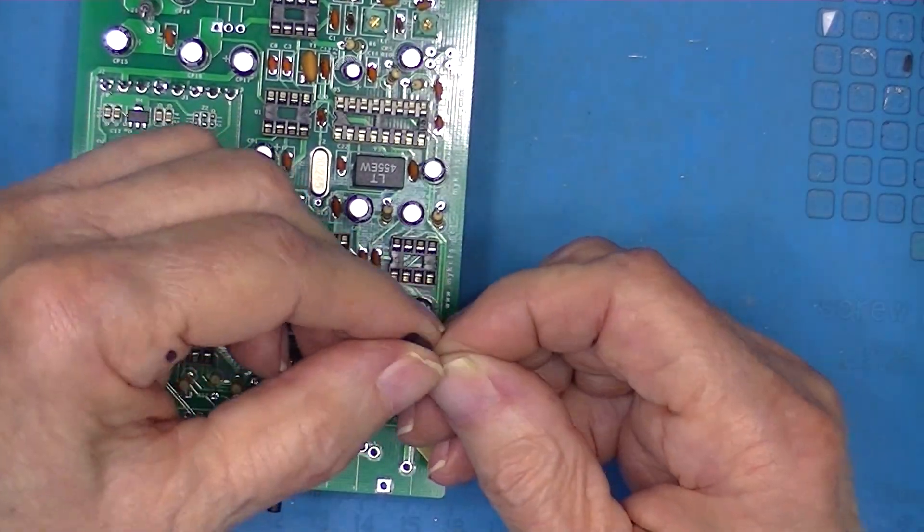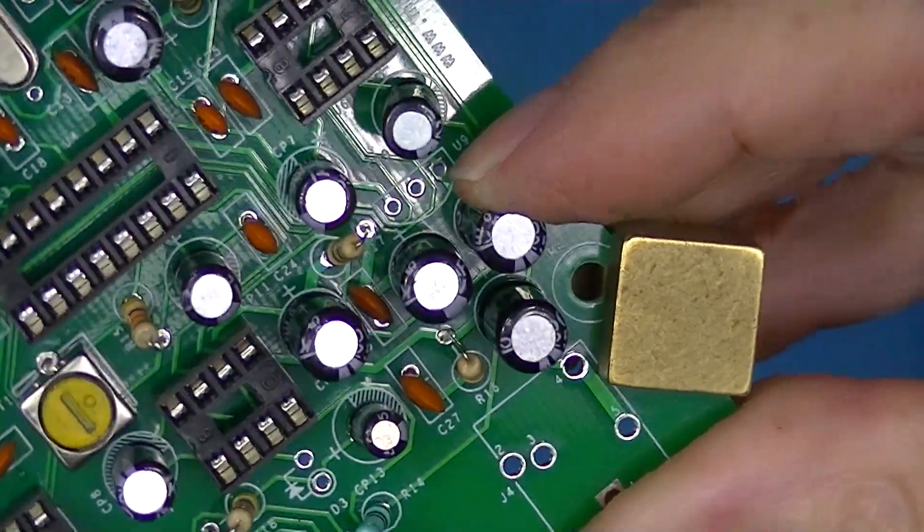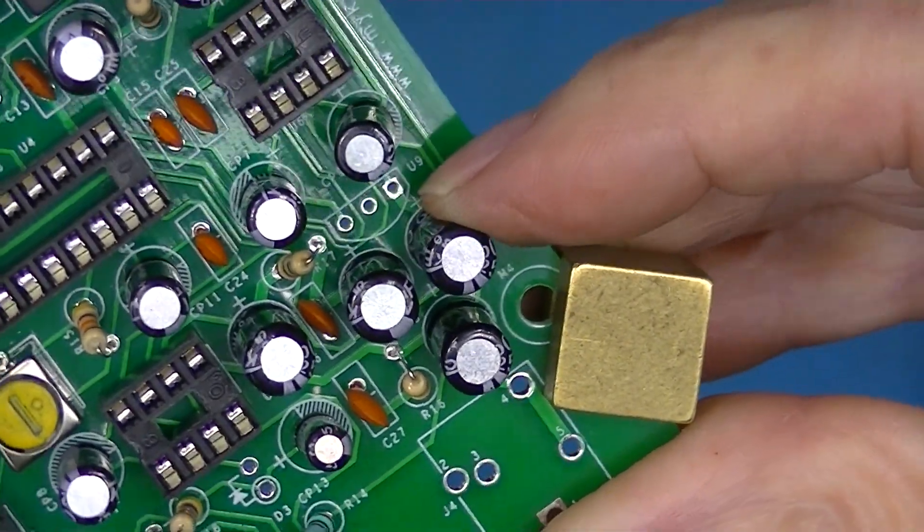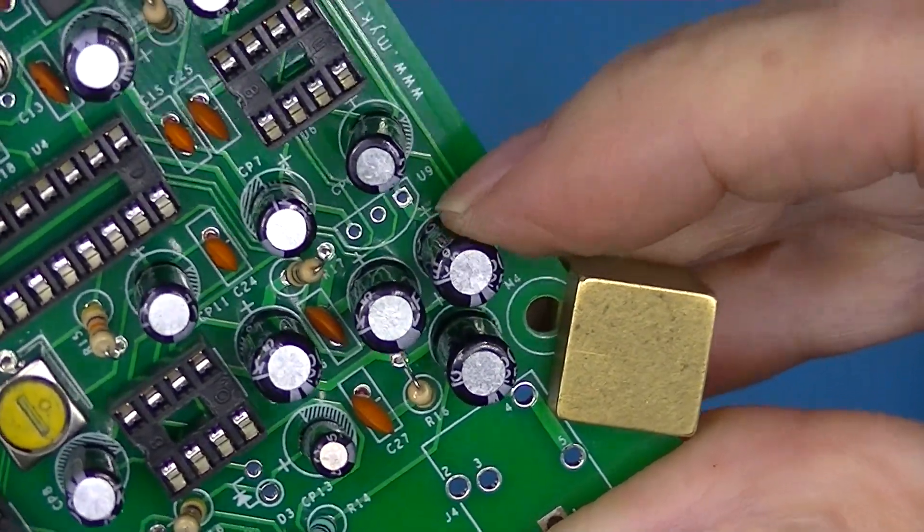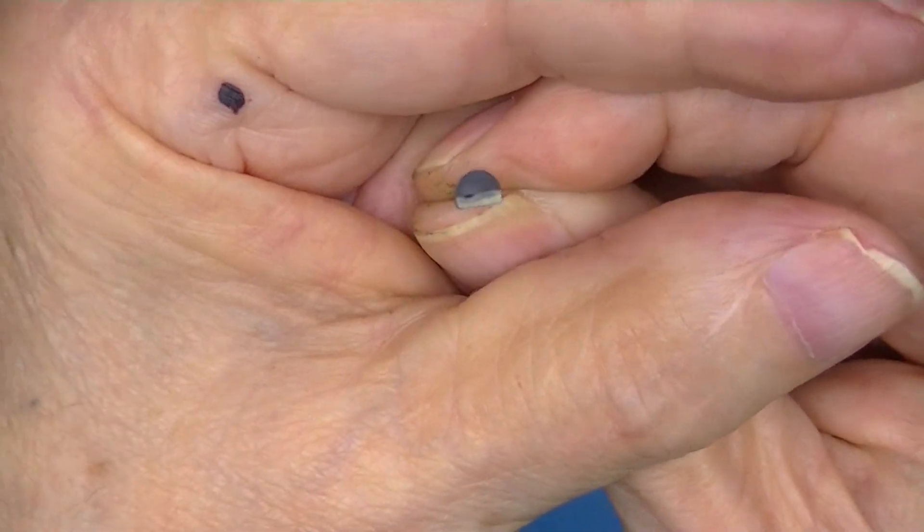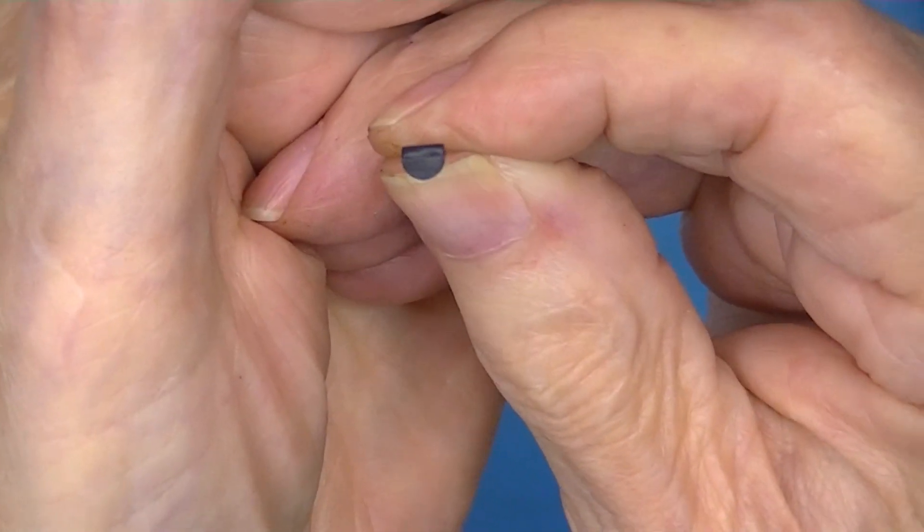This little fellow installs right here. You see the silk screening is flat and rounded on one end. From the top this is flat and rounded.